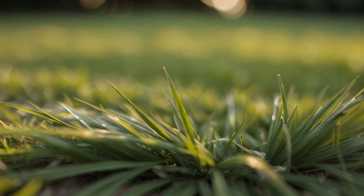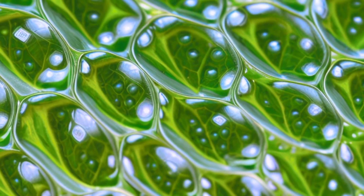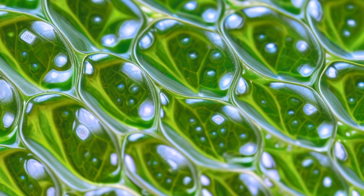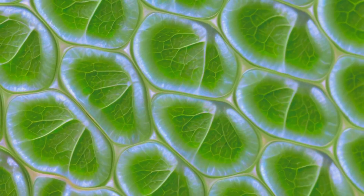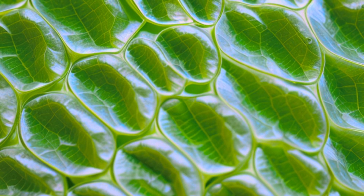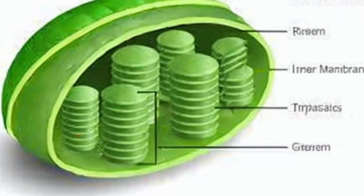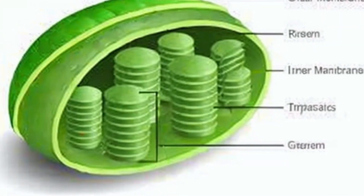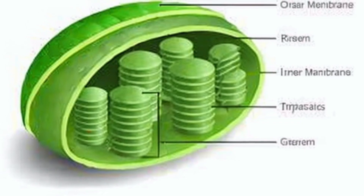Let's break it down. Photosynthesis is the process by which plants, including grass, produce their own food using sunlight. It's like a plant's way of cooking up a meal. This happens in tiny structures called chloroplasts, which contain a pigment called chlorophyll.